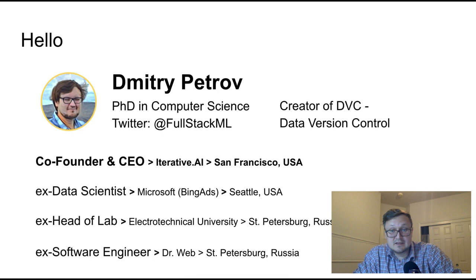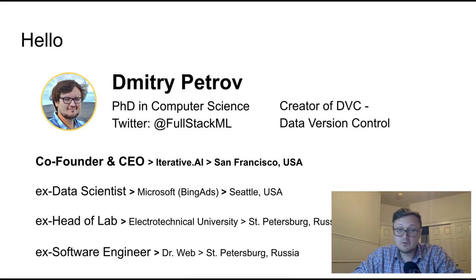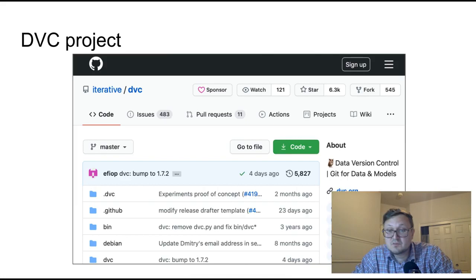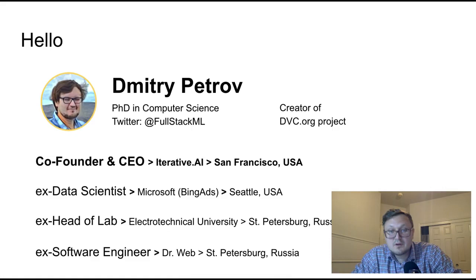A little bit about myself: originally from Russia, a rural place in Siberia. For my entire life I was constantly moving from north to south and now I live in California. I am the author of DVC — Data Version Control — an open source tool that implements principles of data ops and data versioning. Right now we are building a startup in San Francisco around DVC, building different tools for automating ML processes.